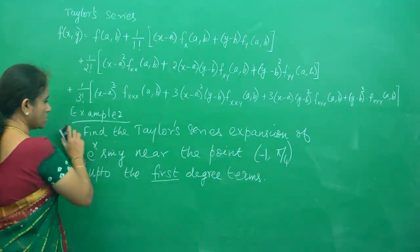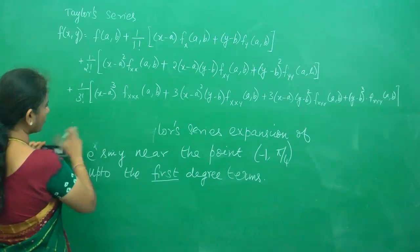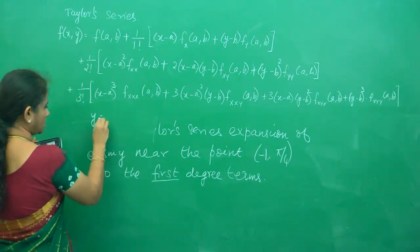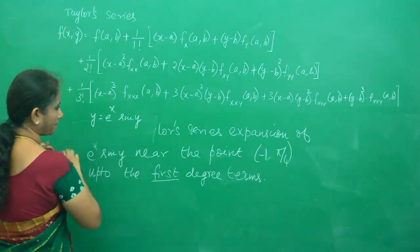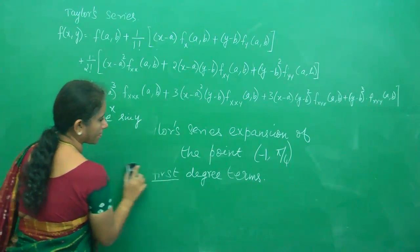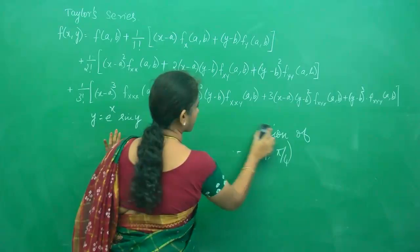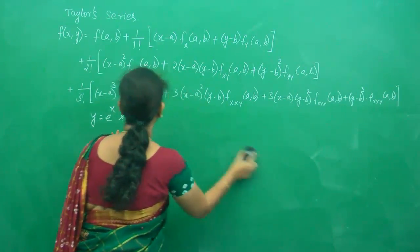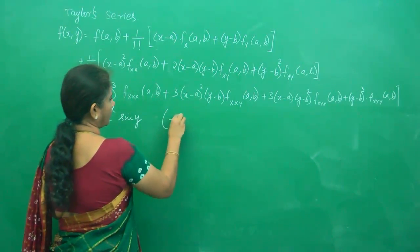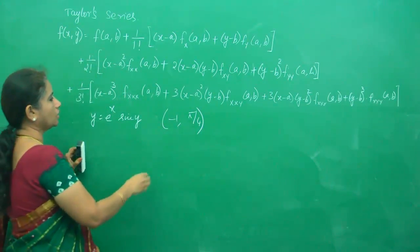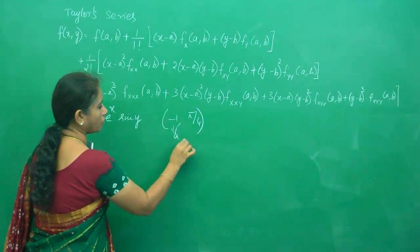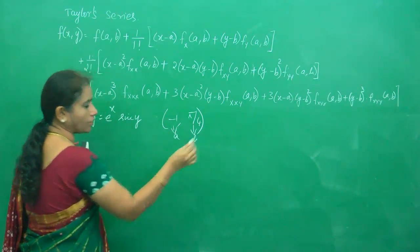Let me erase the question so I get some space. So your function is f(x,y) = e^x sin y, and we're expanding around (-1, π/4). This is a for you, and this is b for you. Shall we start?